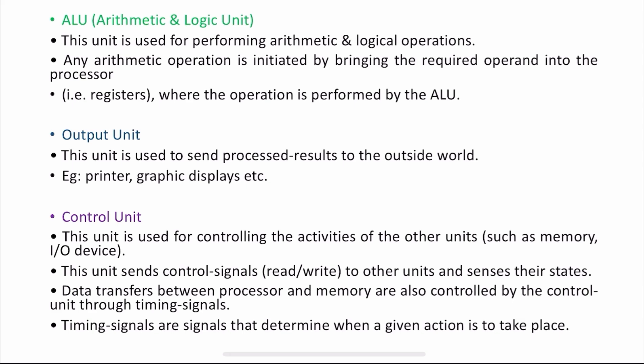The control unit can send a read signal or a write signal. Read means you can fetch the contents — you can read them. Write means you can make changes to your contents. Data transfers between the processor and memory are also controlled by the control unit. It especially uses timing signals. For example, if you want to pass particular information after two seconds, the control unit uses timing signals to know when to send that information.